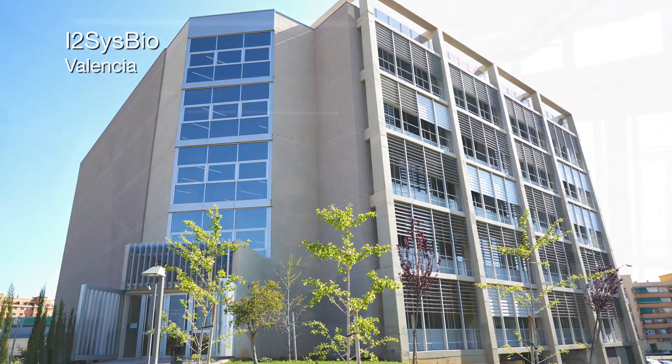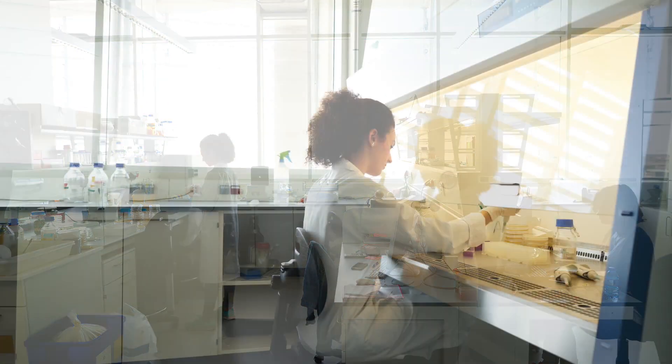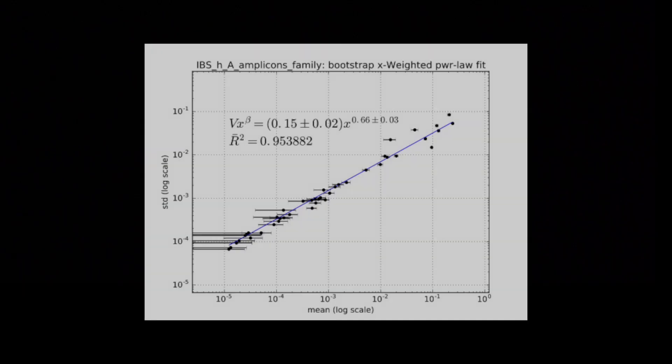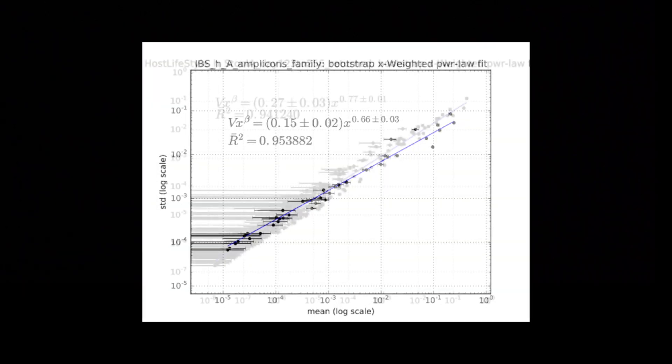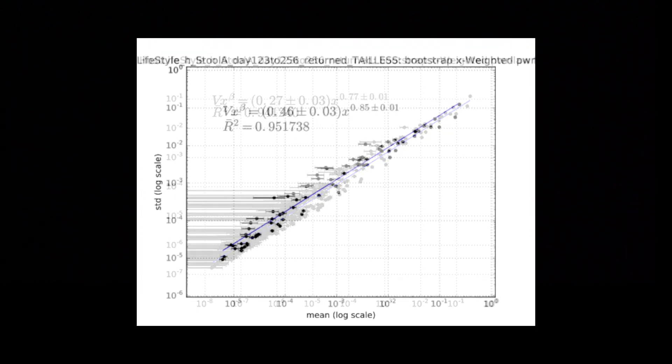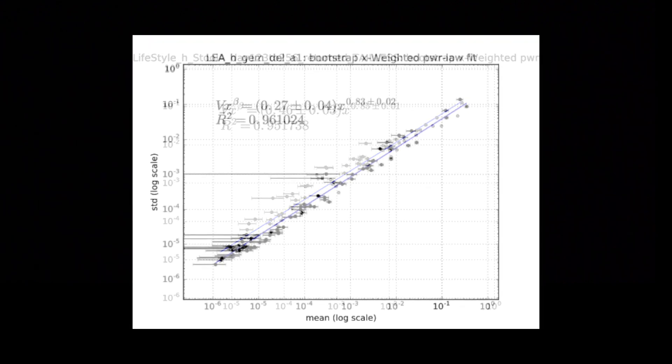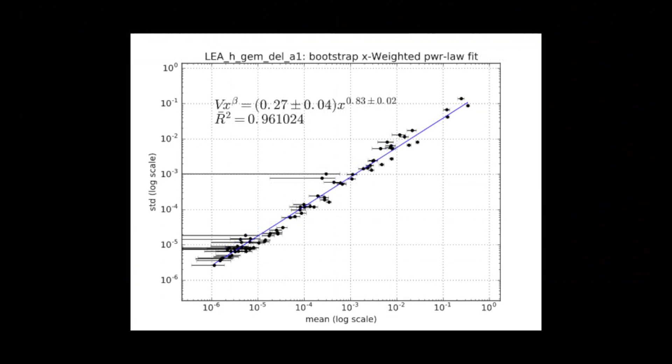We analyze the microbiome temporal variability of longitudinal data obtained in our lab and in the literature and find, without exception, that changes in the relative abundances of taxa followed a ubiquitous pattern: a power law dependence between the mean relative abundances and standard deviations of the time series for each taxon.